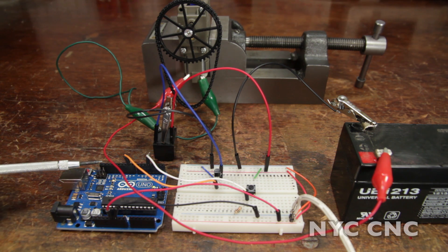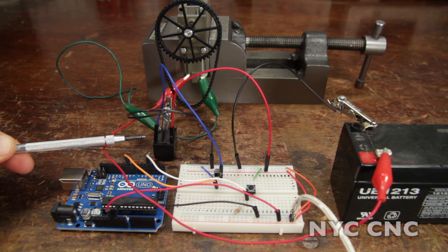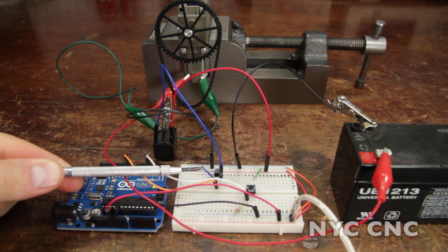The digital output pins on the Arduino don't have enough current to open and close the contacts on this relay so we've got to add a transistor to the mix.